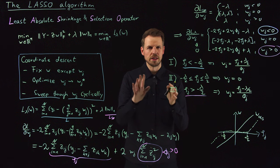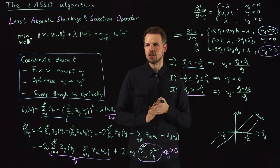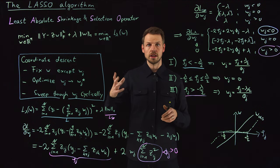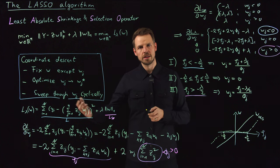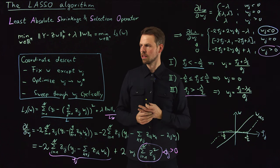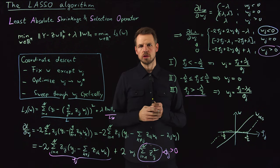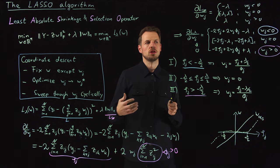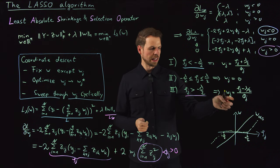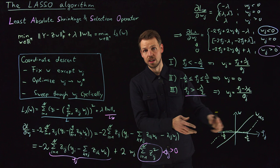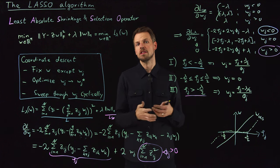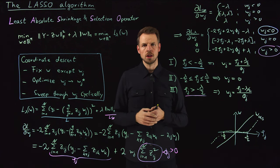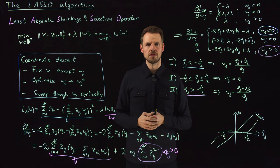So this was a rather technical derivation, but we can use this now in the next video to actually implement the LASSO and study all the things we have learned: regularization, cross-validation, and how to select the best lambda to make sure that we have good sparsity but still a small loss function value. Thanks a lot, and see you in the next video.